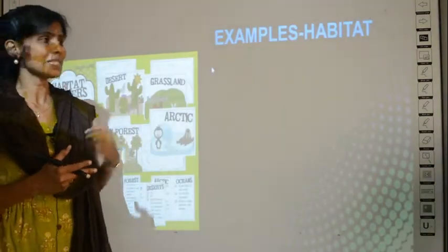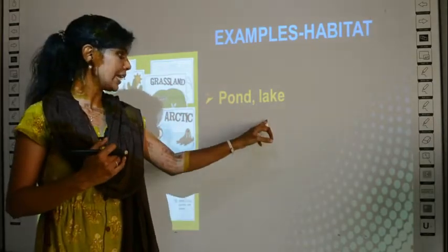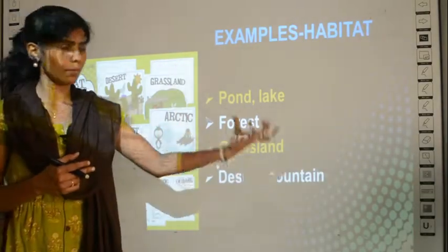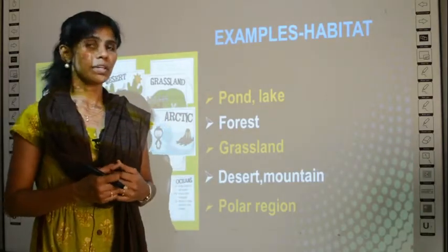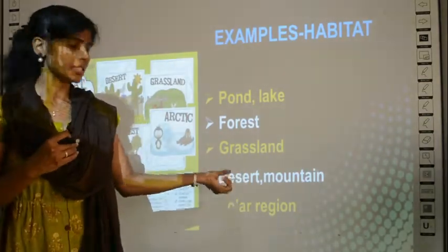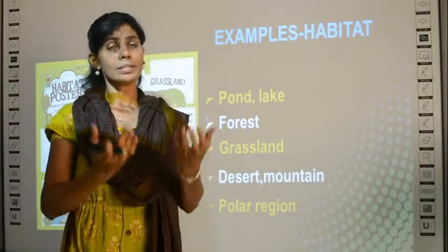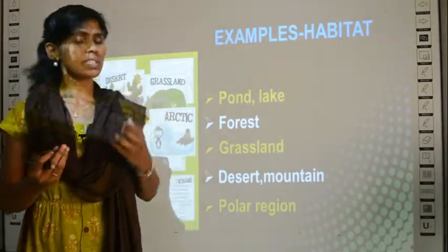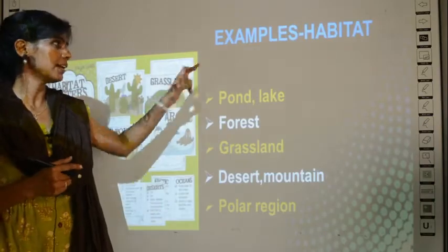What are the examples for habitats? Pond habitat, lake habitat, forest habitat, grasslands habitat, desert or mountain, and polar regions — the ice-cold region — can also be a habitat. Polar bears all live in the polar region. Even extreme conditions like mountains, deserts, and polar regions can be a habitat. The polar bear is self-sufficient there — it eats, it has shelter, everything is accomplished in the same habitat. It doesn't go out for its food or shelter. Every habitat will have all the requirements of the organism.